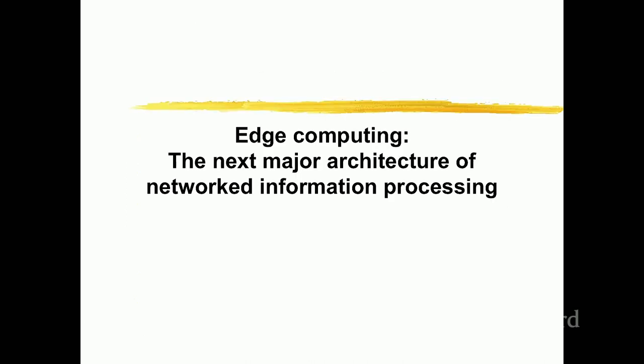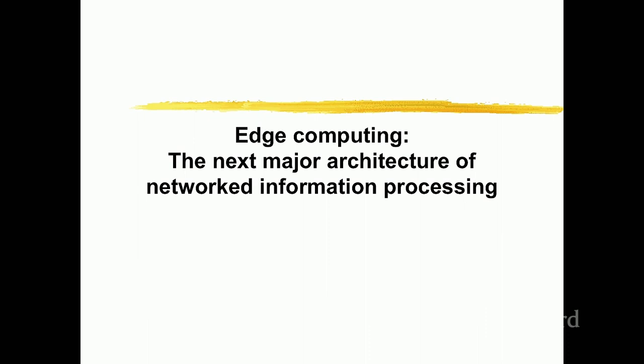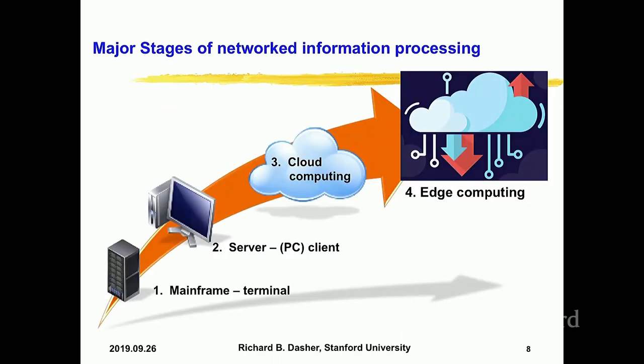Edge computing is really the next major architectural stage in the evolution of networked information processing. There are four stages that have occurred or are occurring in this history of networked information processing: mainframe terminal, client-server, cloud computing, and finally edge computing.